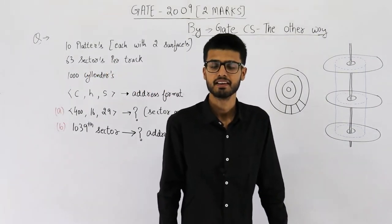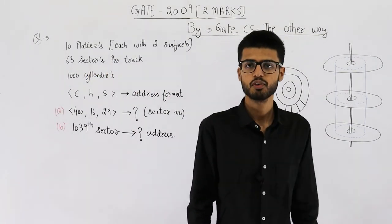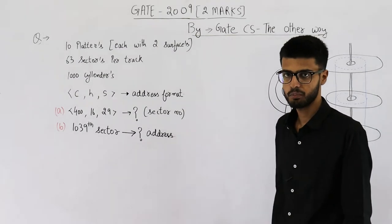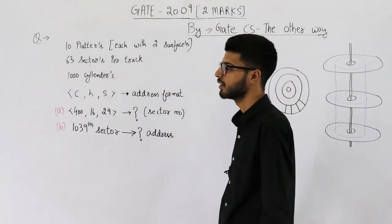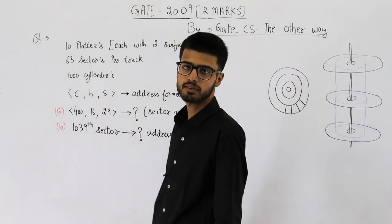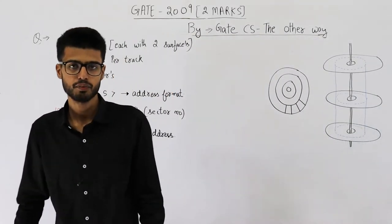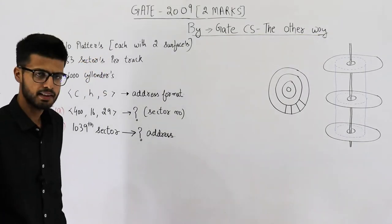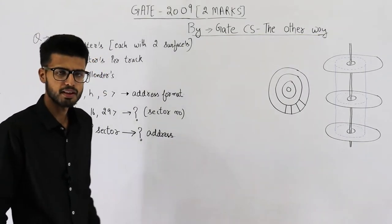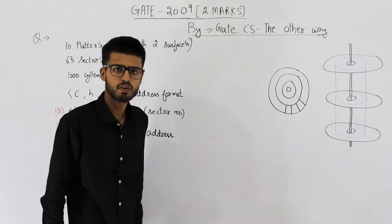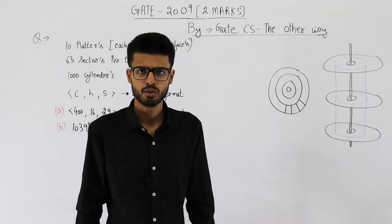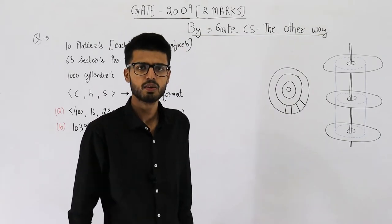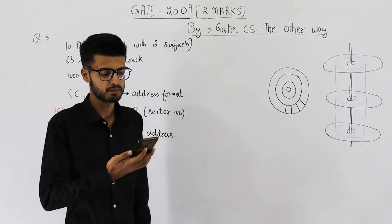Hello people, welcome back. This question is from the Gate 2009 exam. It's a 4-mark question, which means we have two parts, each for two marks. It's from the topic of secondary memory, specifically the structure of hard disk. This is going to be an easy one. Let's read out the statement, then we'll solve it.